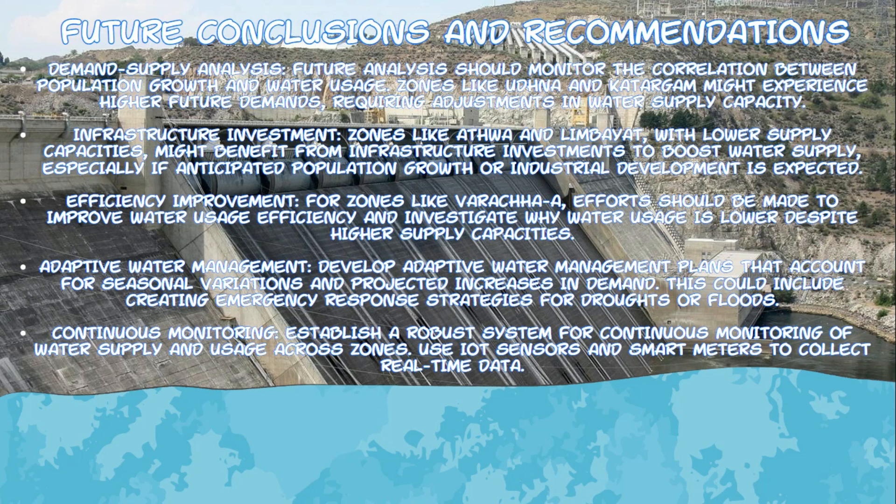For efficiency improvements in zones like Varachha, where water usage is notably lower despite higher supply capacity, efforts should be made to improve water usage efficiency. This discrepancy suggests underlying issues such as inefficiencies in the distribution system, unaccounted water losses, or lower than expected demand. Conducting detailed audits and implementing water-saving technologies can help optimize water usage and reduce waste.